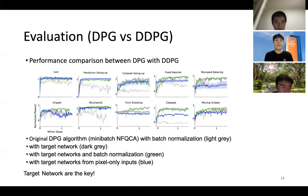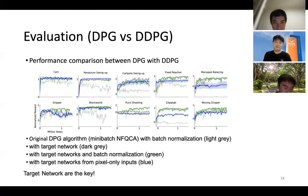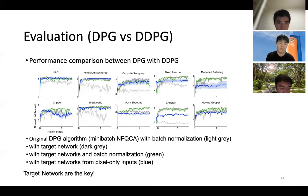Here is the evaluation comparing DPG with DDPG. The author tested several different difficulty-level games. The light gray line is the original DPG algorithm, while the others implement target networks and additional features. In almost 9 out of 10 games, DDPG performed much better than DPG. The author concludes that target networks are the key feature for improvement.